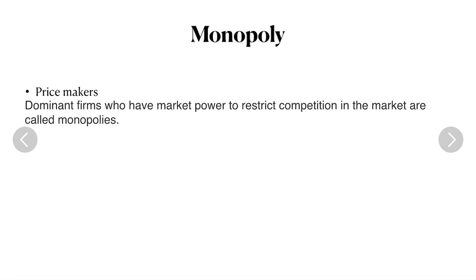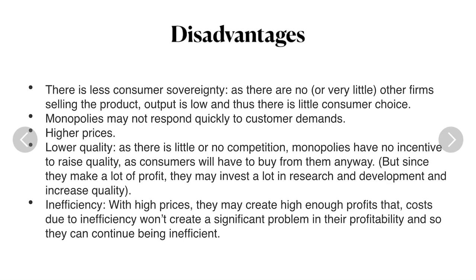Monopoly: the dominant firms who have market power to restrict competition in the market are called monopolies — they are price makers, the one strong firm in the whole market. There will be more sales and increased market share from this monopoly. Disadvantages include less consumer sovereignty, less consumer choice, and monopolies may not respond quickly to customer demands. Higher prices are charged because consumers cannot move to a rival competitor's product. Lower quality results because there is no competition.